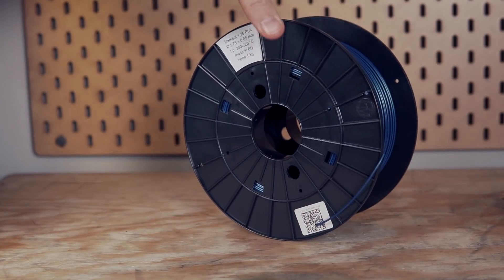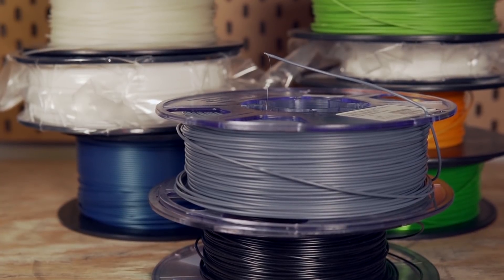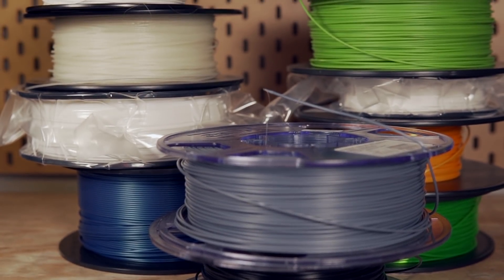Anybody that has been FDM or extrusion-based 3D printing is no stranger to a spool of filament. They come in a massive range of colors. Some of them are chopped with other additives to give them unique looks or unique properties, and there's really a lot of options out there depending on what your specific use case is.